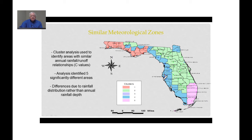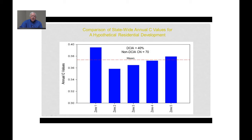Looking at this graphically, for a hypothetical development with a DCIA of 40% and a non-DCIA curve number of 70: Zone 1 (the Panhandle) yields an annual C value of about 0.39, Zone 2 about 0.36, Zone 3 about 0.37, Zone 4 slightly higher, and Zone 5 about 0.38. Again, these differences have nothing to do with actual rainfall depth but reflect differences in the types of individual rain events which occur.